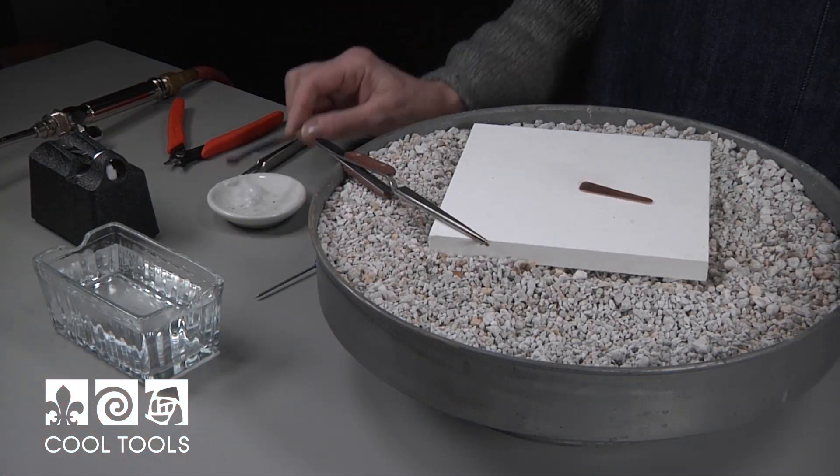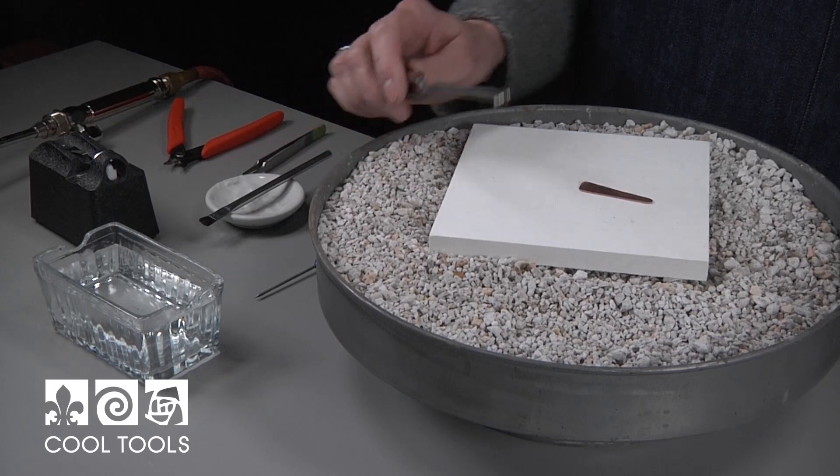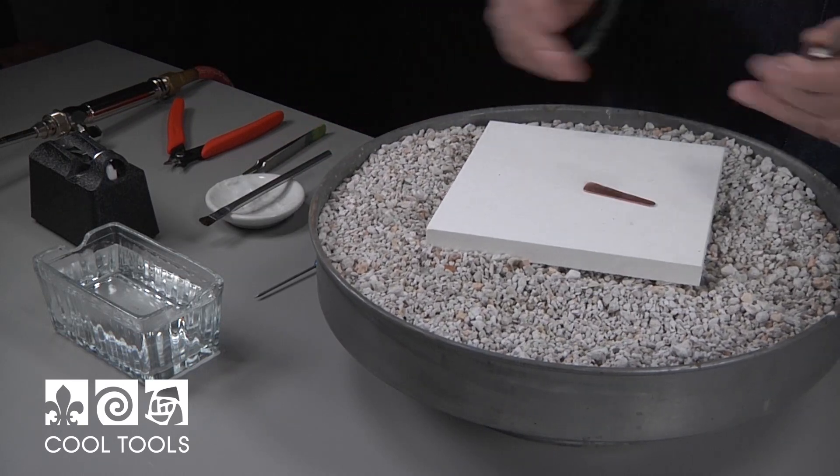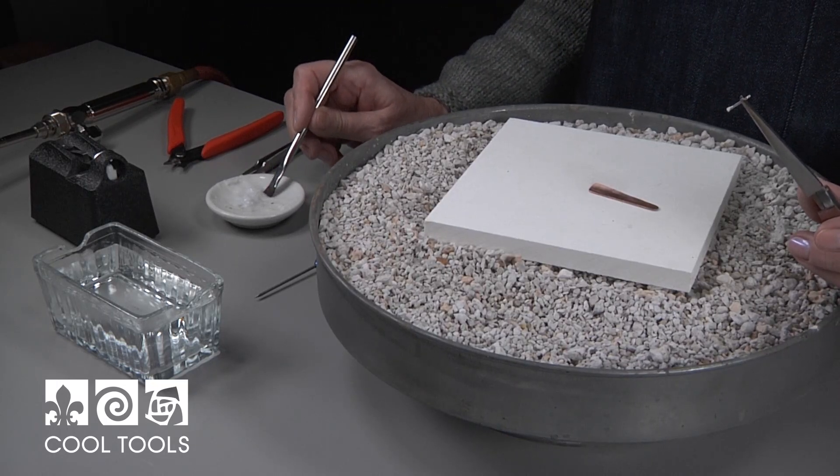Today we're going to be soldering an earring post to an earring. It's also a technique that you can use if you are soldering a post to the back of a piece of metal to then be riveted later in your design.